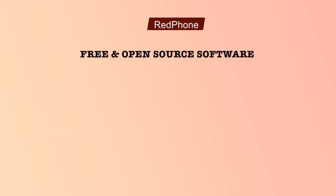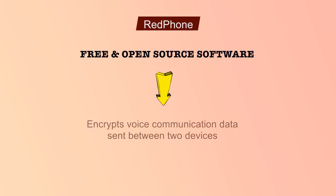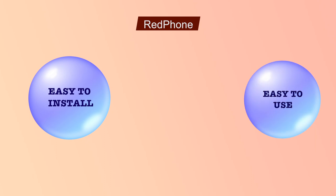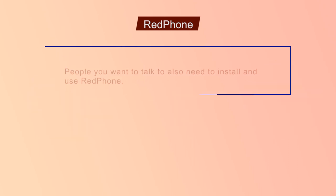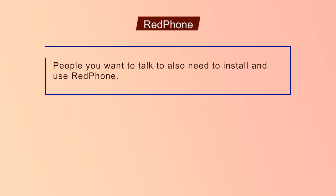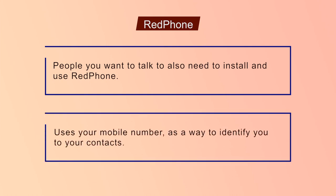RedPhone is a free and open source software application that encrypts voice communication data sent between two devices running this application. It is easy to install and very easy to use since it integrates itself into your normal dialing and contact scheme, but people you want to talk to also need to install and use RedPhone. For ease of use, RedPhone uses your mobile phone number as a way to identify you to your contacts. Unfortunately, this makes it more difficult to use RedPhone without a functioning mobile service plan, even on a device capable of using Wi-Fi to connect to the internet.